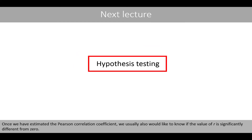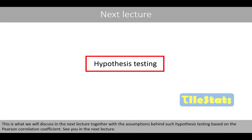Once we have estimated the Pearson correlation coefficient, we usually also like to know if the value of r is significantly different from zero. This is what we will discuss in the next lecture, together with the assumptions behind hypothesis testing based on the Pearson correlation coefficient. See you in the next lecture!